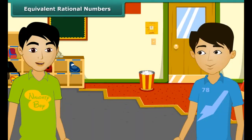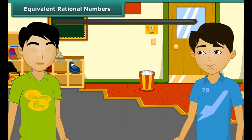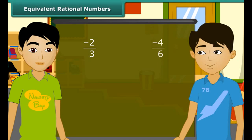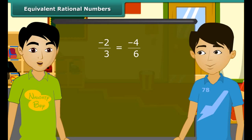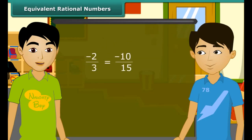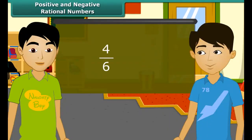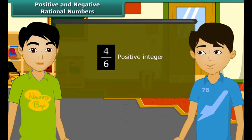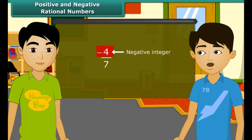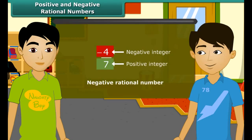I will now tell you about equivalent rational numbers. When we multiply the numerator and denominator of a rational number by the same non-zero integer, we obtain another rational number which is equivalent to that number. Similarly, minus 2 by 3 is equivalent to minus 10 by 15, because when we multiply the numerator and denominator by 5, we get minus 10 by 15. A rational number with positive numerator and positive denominator is called a positive rational number. When the numerator is a negative integer and the denominator is a positive integer, for example minus 4 by 7, it is a negative rational number.